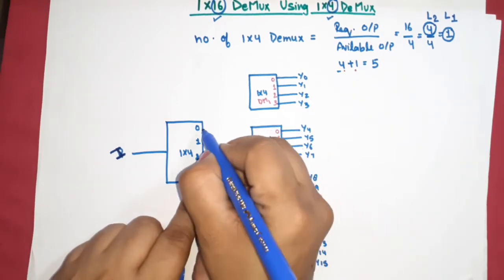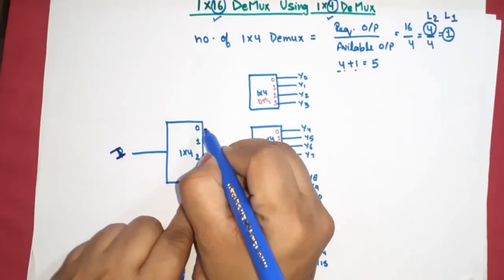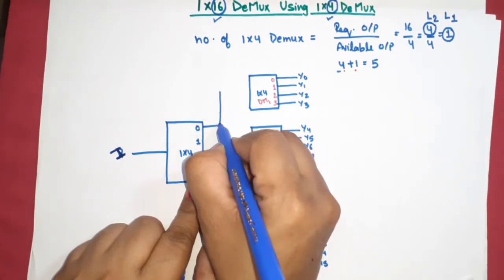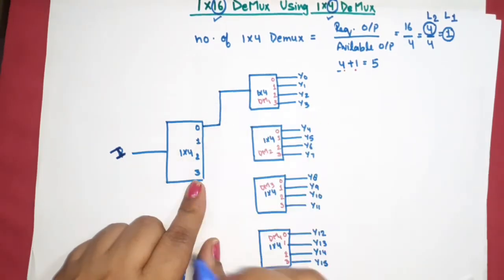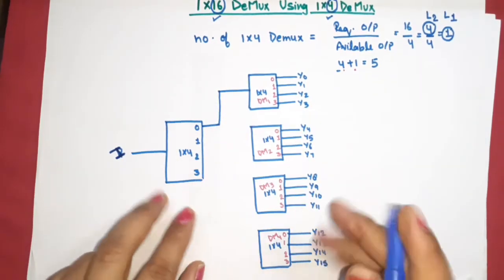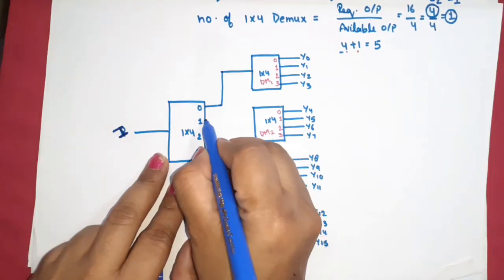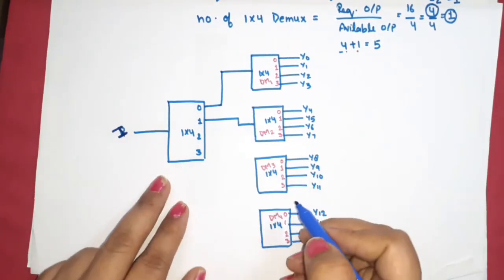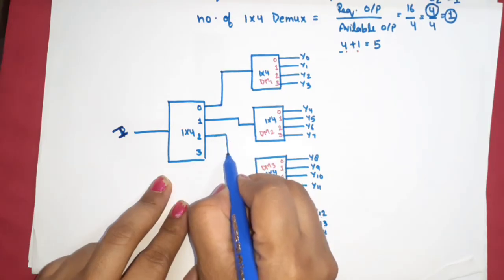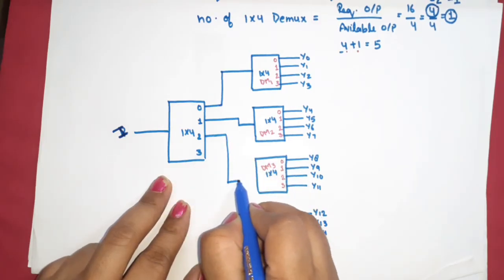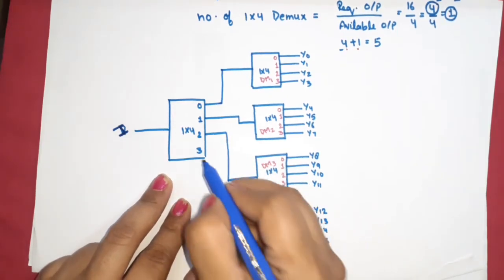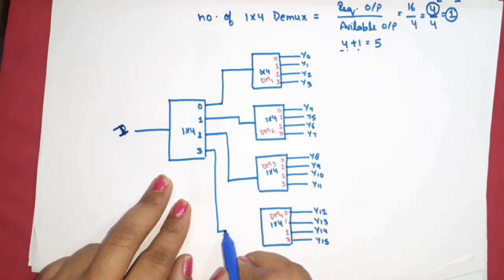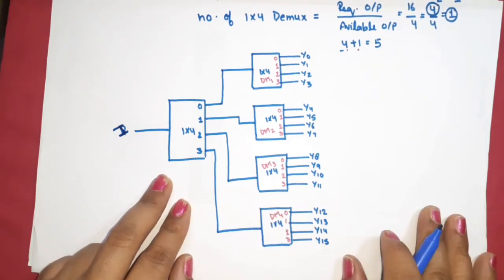Now for outputs: the first output of the label-1 demux works as input for dm1 at label 2. The second output works as input for dm2, the third output works as input for dm3, and the fourth output works as input for dm4.